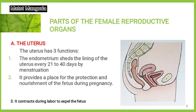The uterus has three functions. Number one, the endometrium renews the lining of the uterus every 21 to 40 days by menstruation. Number two, it provides a place for the protection and nourishment of the fetus during pregnancy. Number three, it contracts during labor to expel the fetus.